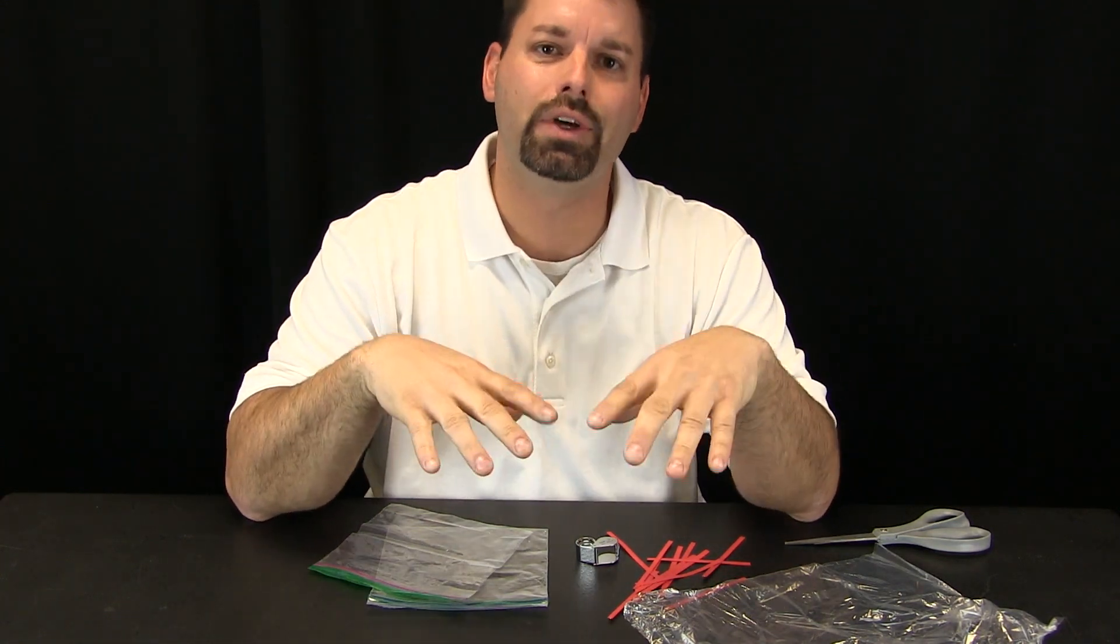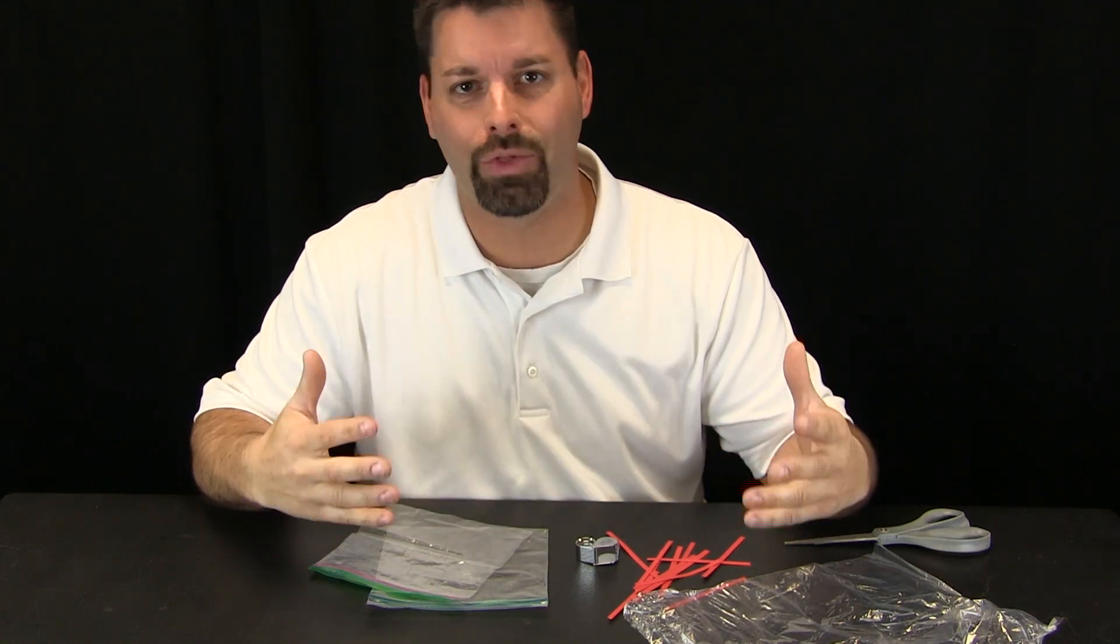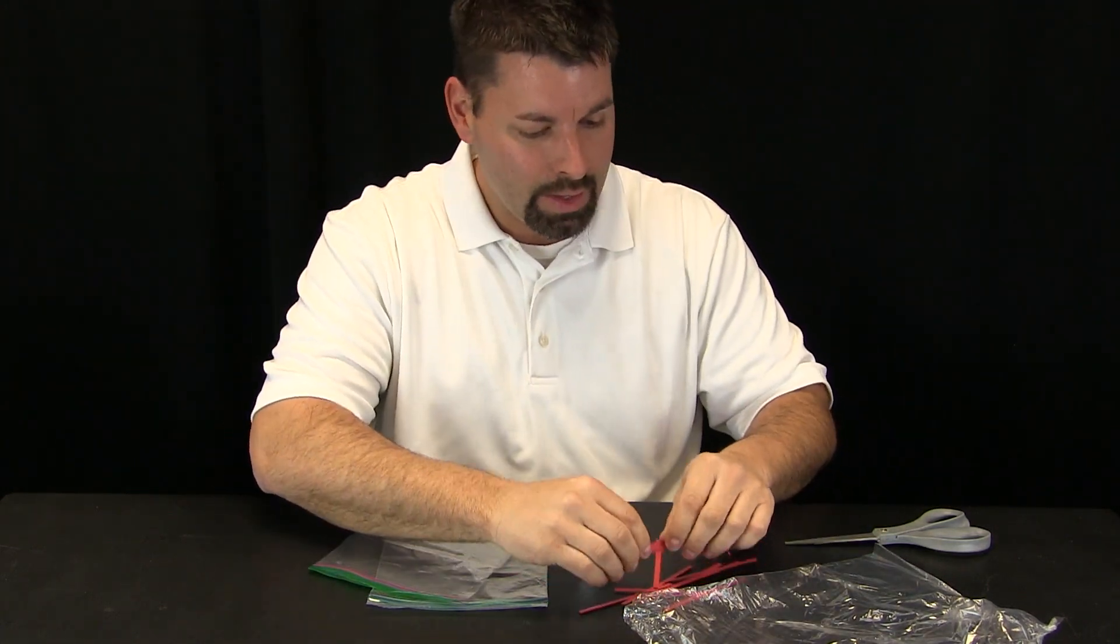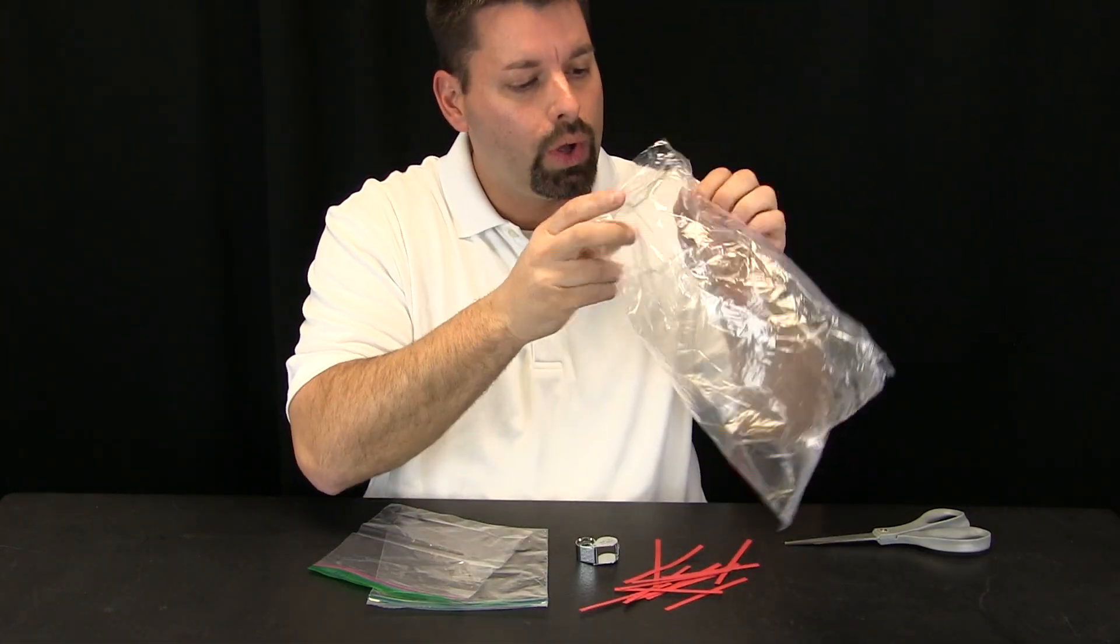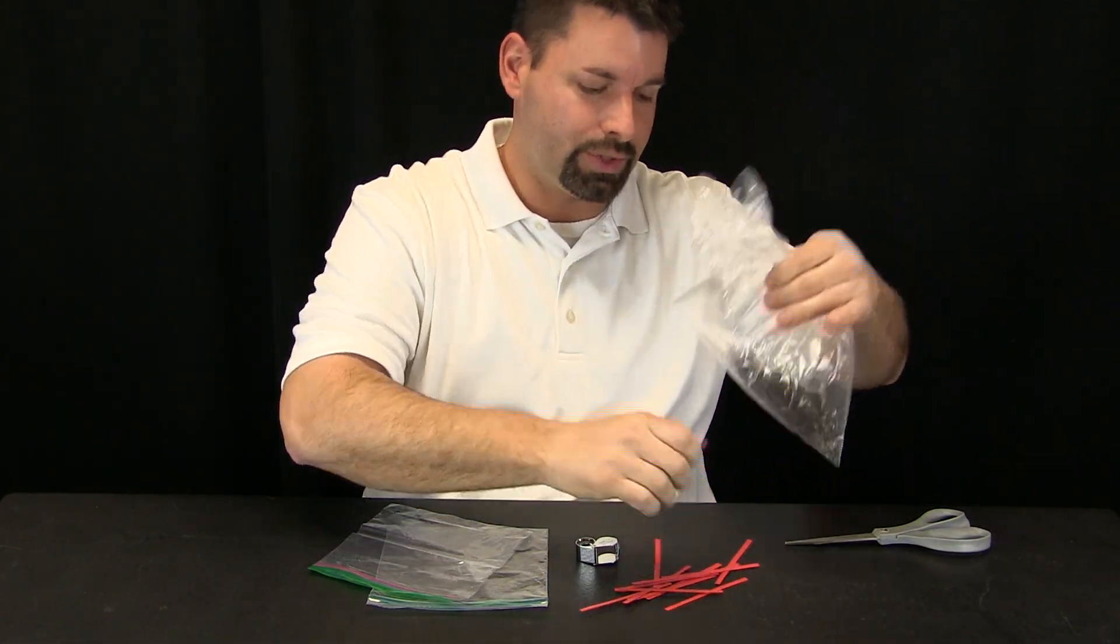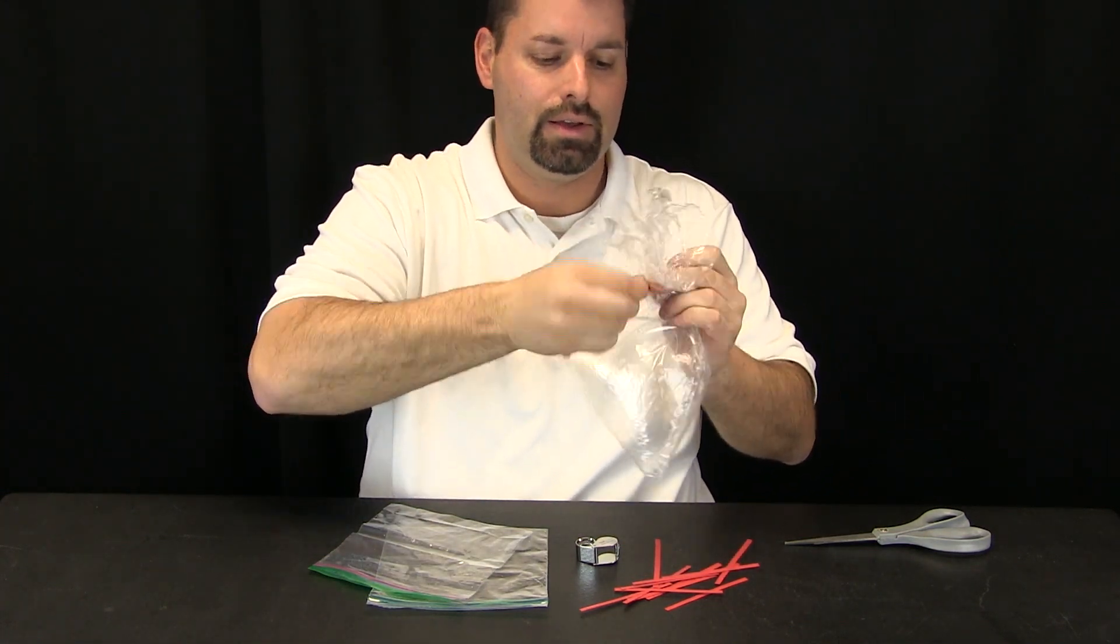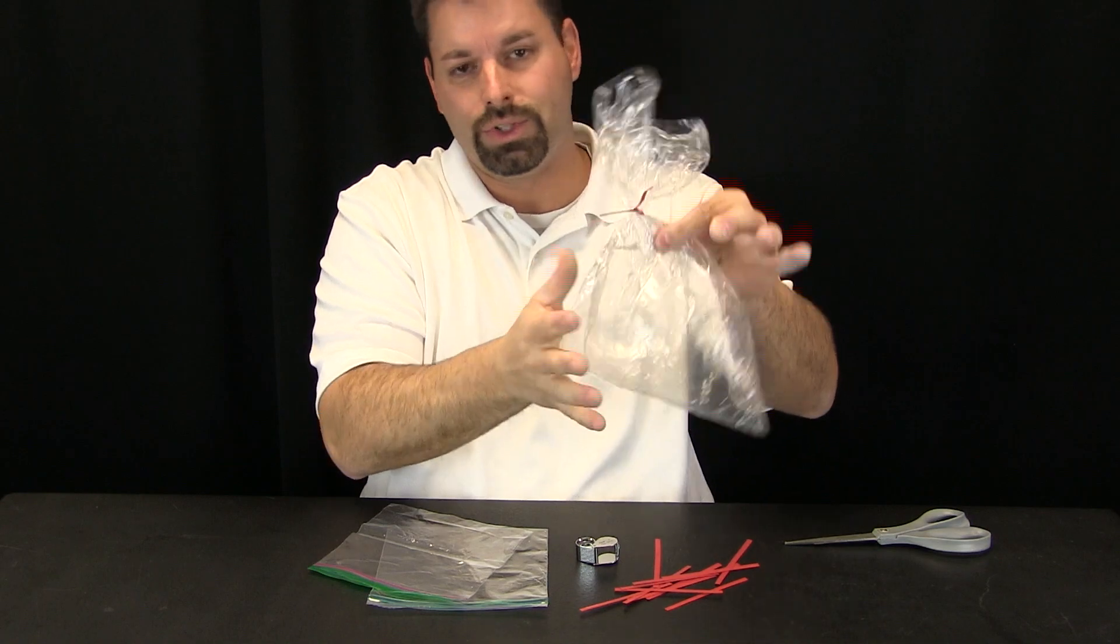So the challenge is to figure out different ways to close a bag. It makes sense to take a closer look at some ways that are already out there and exist. The first one that comes to mind is the twist tie. I have a baggie, put some air in it, I have to close it, I twist the bag, take my twist tie, twist it closed.